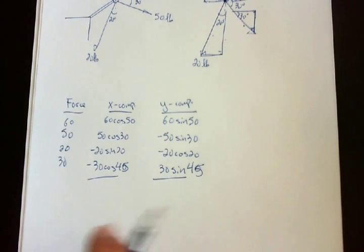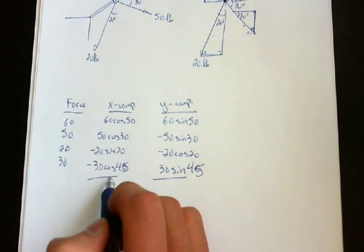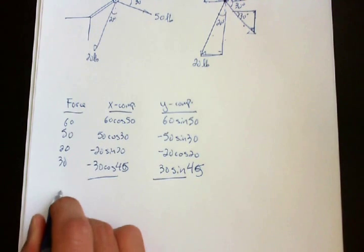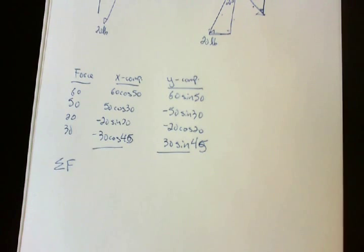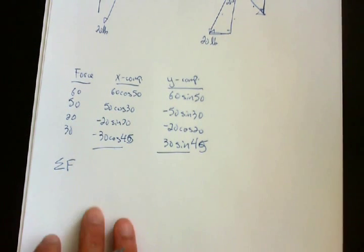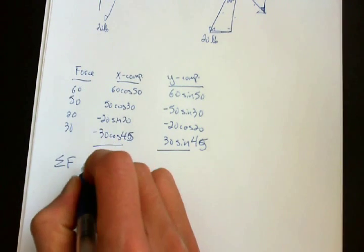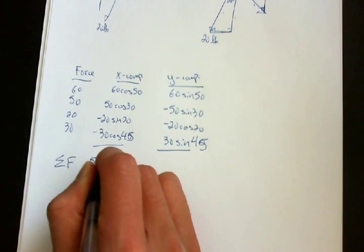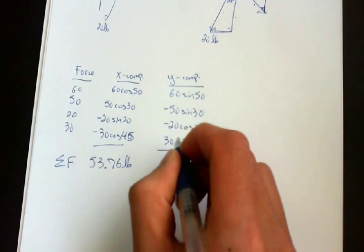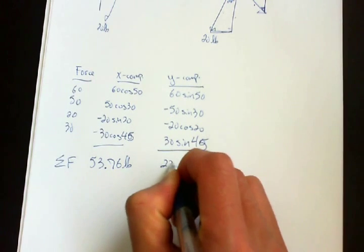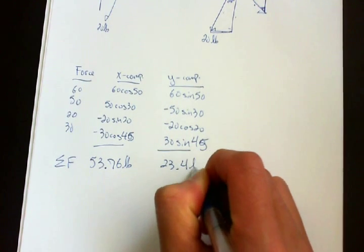Okay, so now the next step is to sum up the forces in the x-component and the y-component. So sum of forces. And if you do that, then for x, it should be 53.76 pounds. And for y, it should be 23.4 pounds.